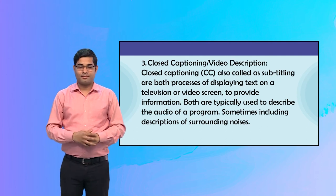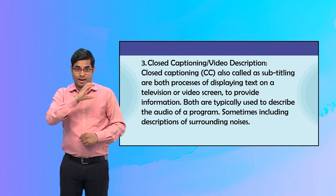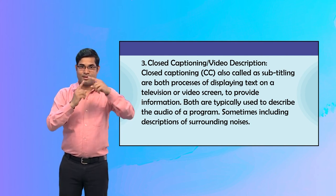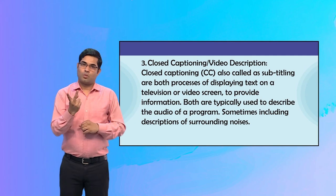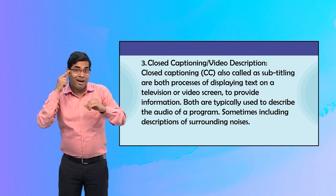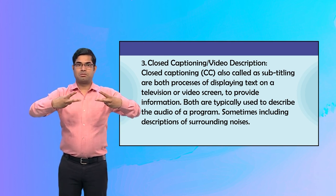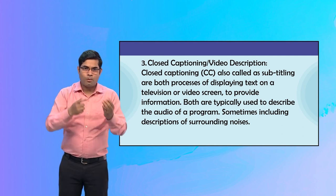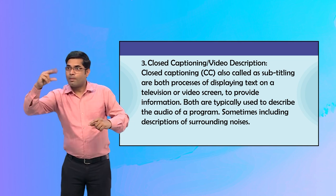3. Closed captioning and video description. Closed captioning, CC, also called subtitling, involves displaying text on a television or video screen to provide information. Both are typically used to describe the audio of a program, sometimes including descriptions of surrounding noises.